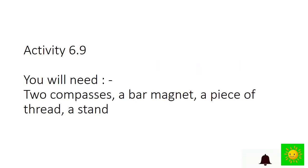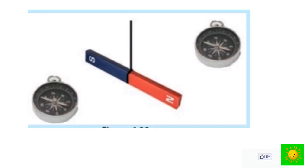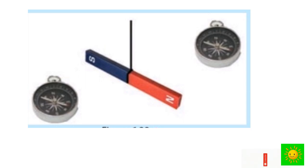You can do this simple activity using two compasses, a bar magnet, a piece of thread, and a stand. Hang one bar magnet horizontally on the stand using a piece of thread. Keep two compasses about two meters apart from each other. Take another bar magnet and bring each of its poles closer to each compass and to the hanging magnet.